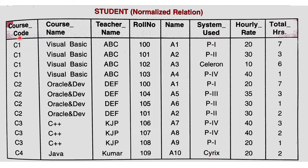Here we are storing the data of courses, with information in the form of course code, course name, and teacher name. We are also storing the data of students who are doing these courses — roll number, name, system used, hourly rate, and total hours spent by students on that particular course.